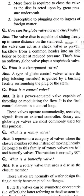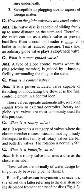How can globe valves act as a check valve? Answer: The valve disc is capable of sliding freely up to some distance on the stem. Therefore, the valve can act as a check valve to prevent backflow from a common header into an idle boiler or boiler at reduced pressure. That is how an ordinary globe valve acts as a stop-check valve.